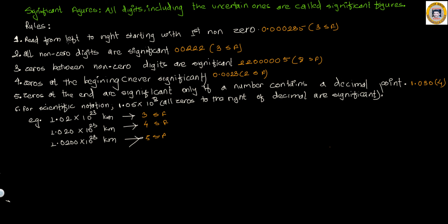Rule number one: read from left to right, starting with the first non-zero digit. Whenever you are given decimals with zeros in the beginning, you have to start counting from the first non-zero digit. In this case, the first non-zero term is 2, so we start counting from 2: 1, 2, 3 — so the significant figure count is 3.